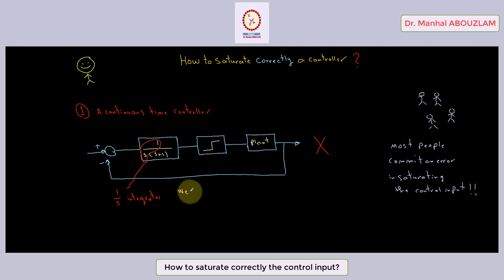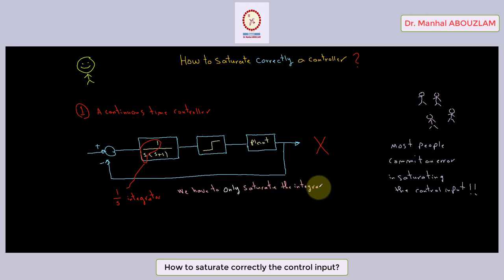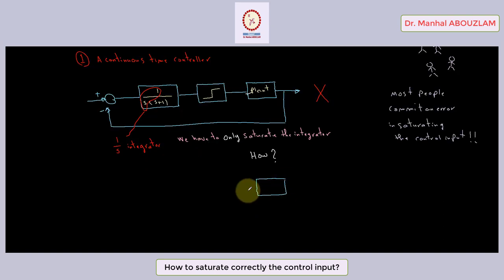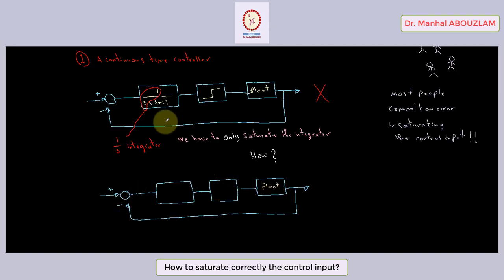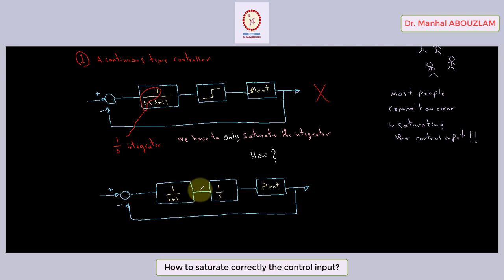In fact, we have to only saturate the integrator. So we go back to our closed loop system. We put the integrator apart, then the rest we put it here, then we saturate the integrator.